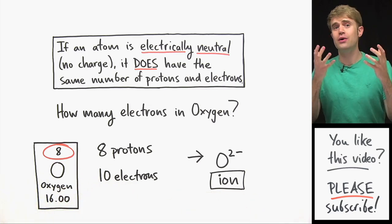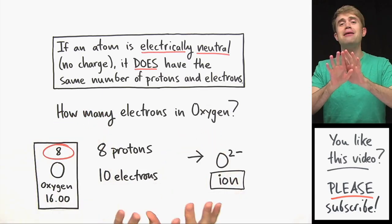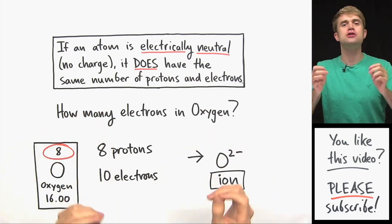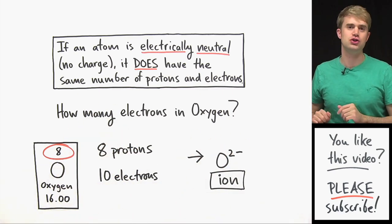So if you run into an atom with different numbers of protons and electrons, it doesn't mean that that atom could never exist. It just means that you're talking about a charged atom, an ion, something that has a charge.